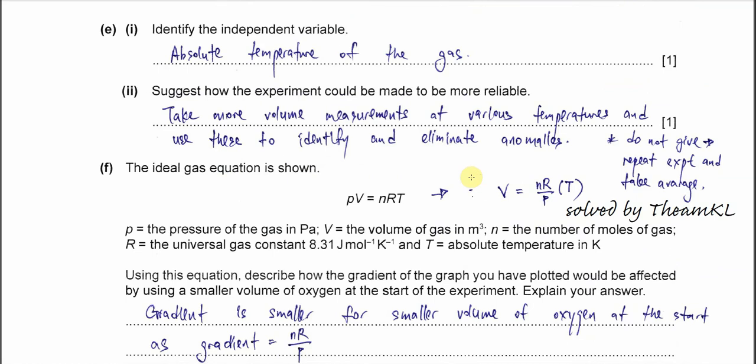Part E(i): Identify the independent variable. The one we can change is the temperature. We can use different temperatures—when we use different temperatures, the volume of gas will change.